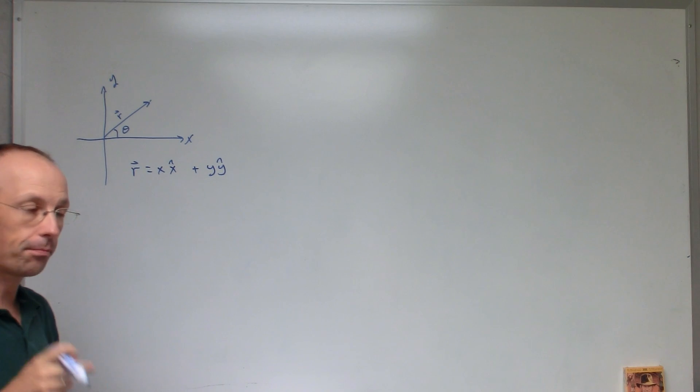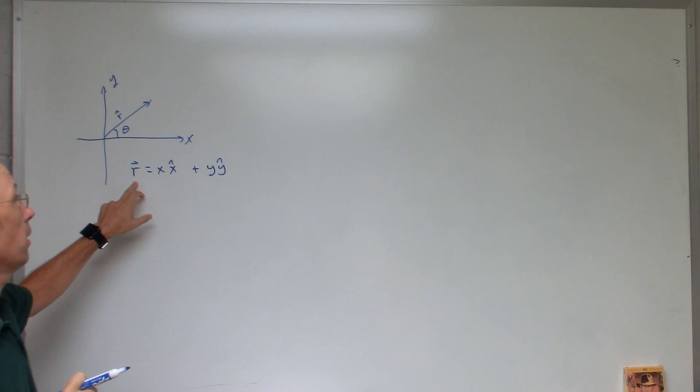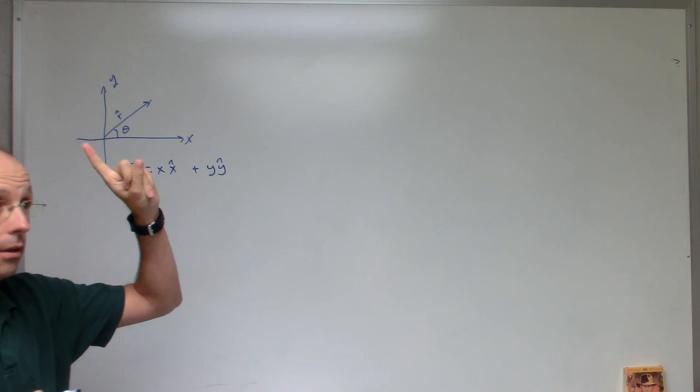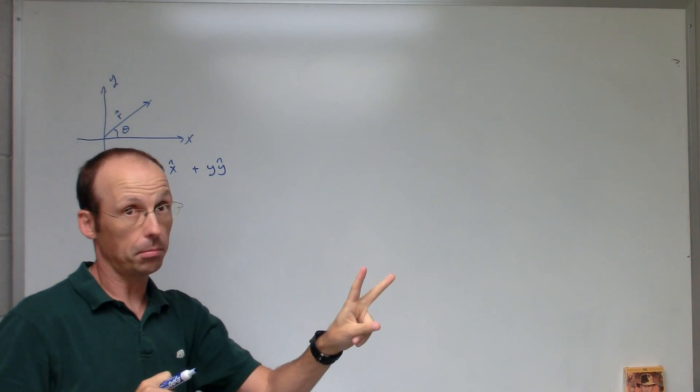Okay, I'm going to try to go fast. So what I want to do is to get the position. Here's the position vector in Cartesian coordinates, and I want to write the position vector in polar coordinates and determine the velocity in polar coordinates.